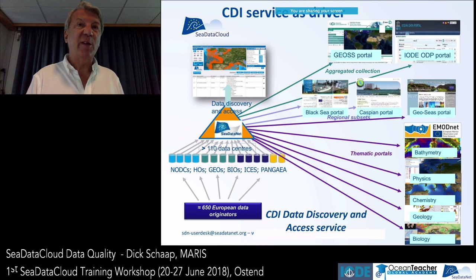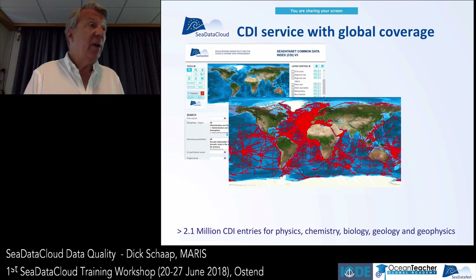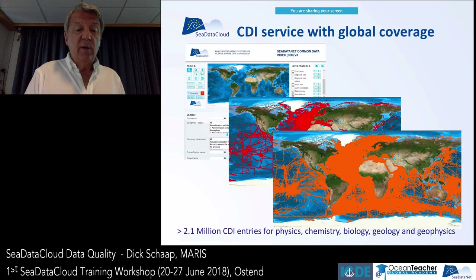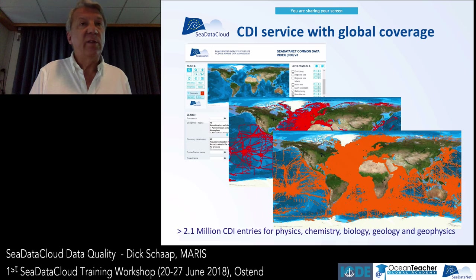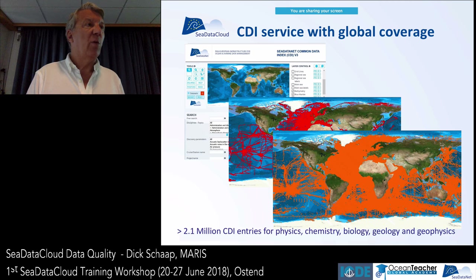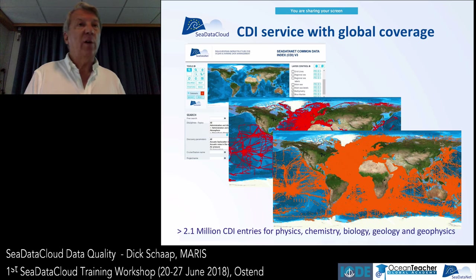The CDI infrastructure is not just a project — it's a real operational infrastructure with many links to different communities and projects, used on a daily basis. That's why it's so important that if we're migrating to an upgraded system, you are all motivated and engaged and understand the importance of doing a good job. Looking at the data coverage, we have quite big global coverage — now more than 2.1 million records, and every month tens of thousands more are coming in.